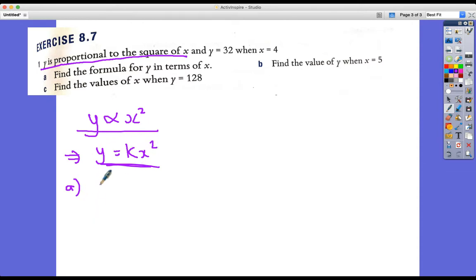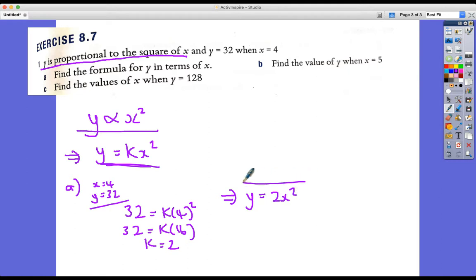So we know that when X is 4, Y is 32. Put those values in. We know that 4 squared is 16. So K is 2. So the formula that you have to do in part A is going to be Y equals 2X squared. Now we're going to use that in part B.